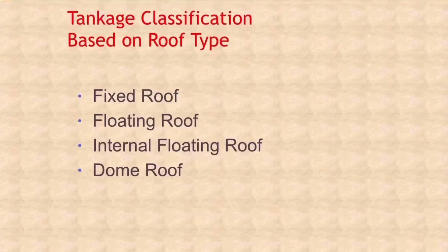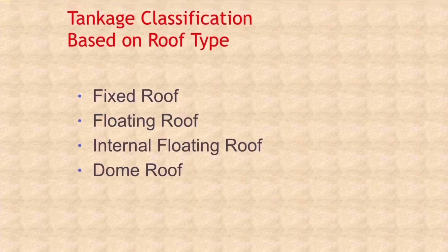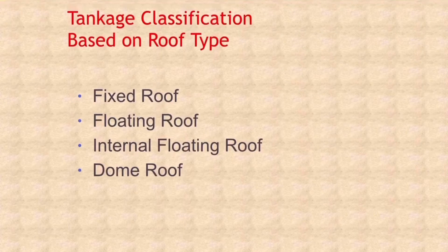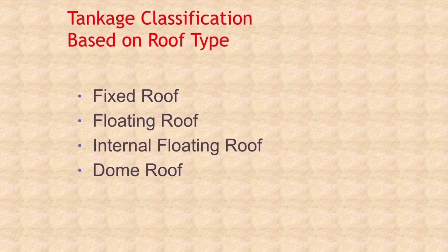The second type of tankage classification is based on roof type. There are four roof type classifications available: one is fixed roof tanks, number two is the floating roof tanks, number three is the internal floating roof tanks, and number four is the dome roof tank.